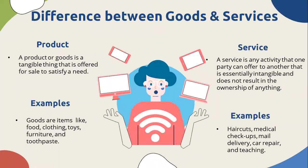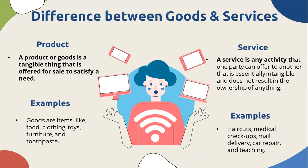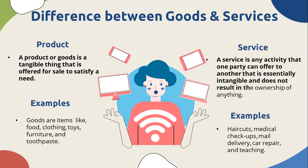Let's understand the basic difference in goods and services. A product or goods is a tangible thing that is offered for sale to satisfy a need. In comparison, a service is an activity that one party can offer to another that is essentially intangible and does not result in the ownership of anything. Services cannot be owned or touched, whereas products can be touched and they can definitely be owned.